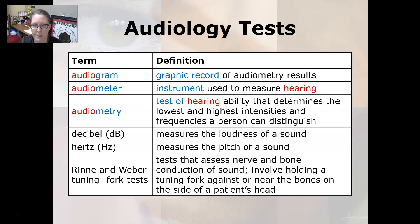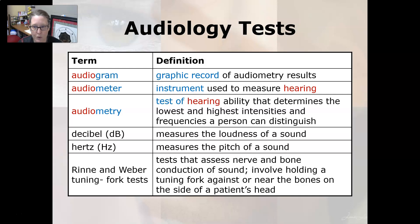An audiogram is a graphic record of audiometry results. An audiometer is an instrument used to measure hearing. Audiometry is a test of hearing ability that determines the lowest and highest intensities and the frequencies a person can distinguish.